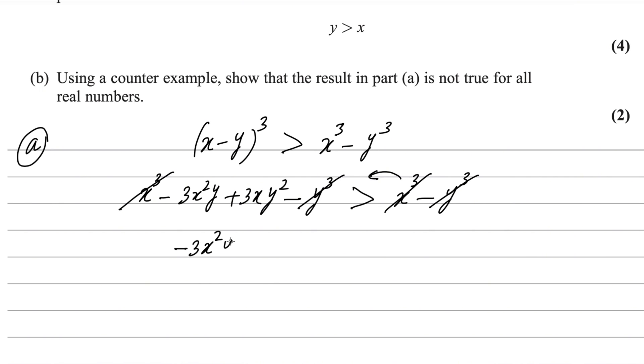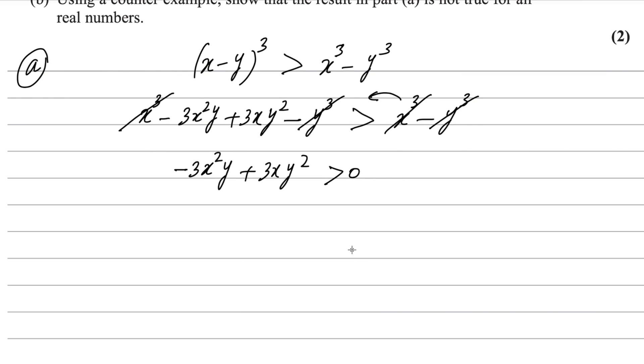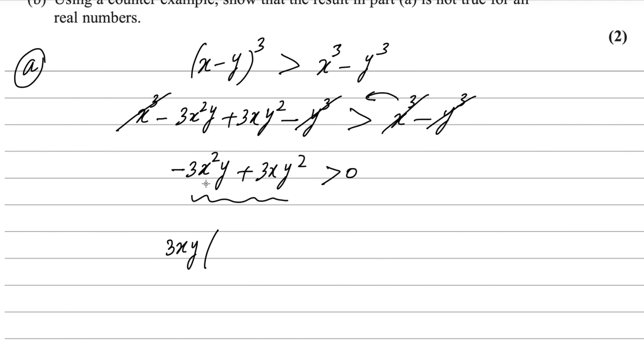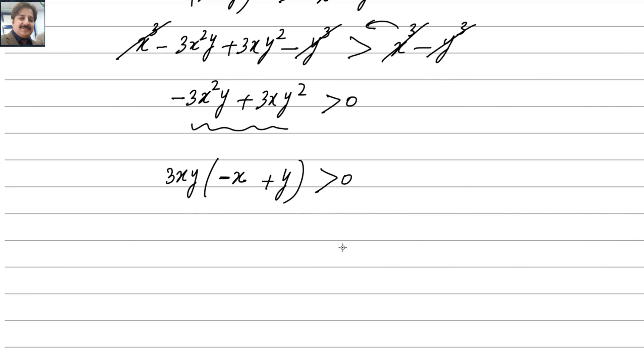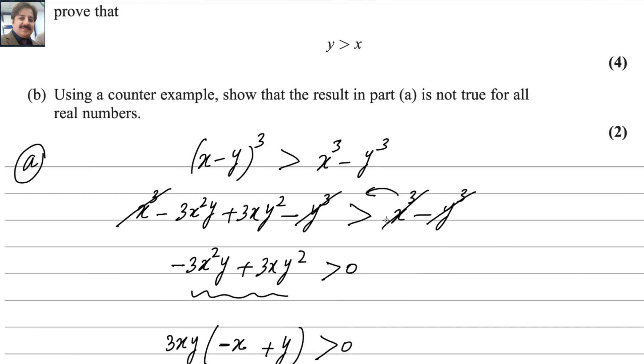The only expression left on the left side is -3x²y + 3xy² greater than 0. 3xy is common between these two, so you can take it out. Factor out 3xy: 3xy(-x + y) greater than 0.